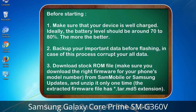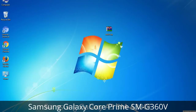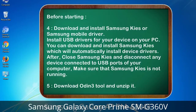3. Download the stock ROM file. Make sure you download the right firmware for your phone's model number from Sammobile or Samsung Updates, and unzip it only one time. The extracted firmware file has a *.tar.md5 extension. 4. Download and install Samsung KIES or Samsung mobile driver to install USB drivers for your device on your PC. Samsung KIES will automatically install device drivers.